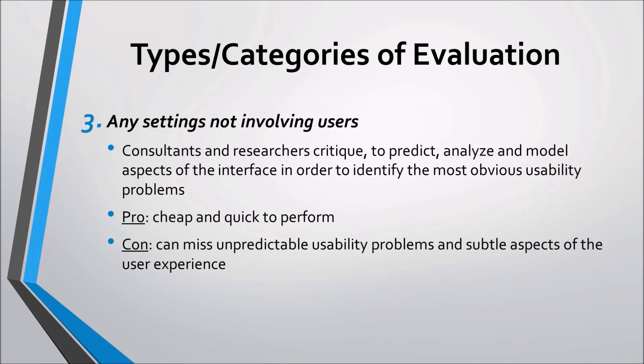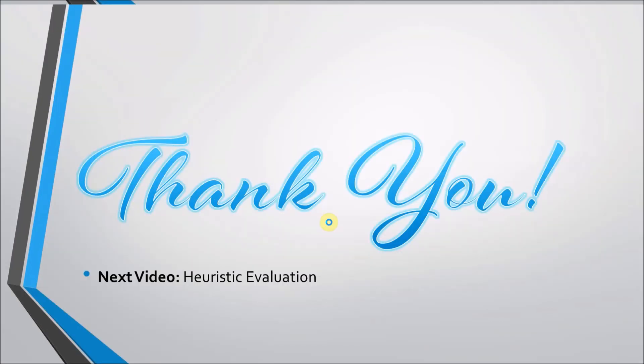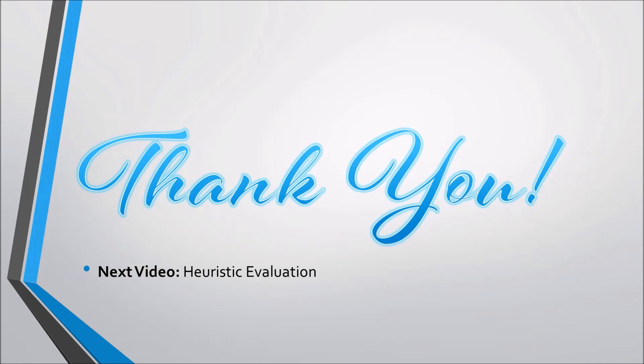In the next video, we will discuss in detail one of the approaches to this category, and that is heuristic evaluation using the 10 usability heuristics by Jacob Nielsen. That ends the first part of our discussion on the different activities or categories of conducting evaluation of systems, software products, or any products in general. Thank you so much for watching and see you in the next video. Good day and have a safe and productive stay at home.